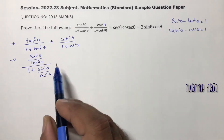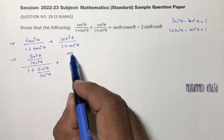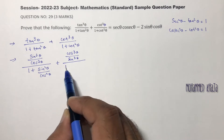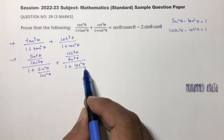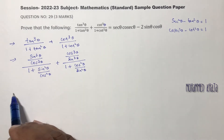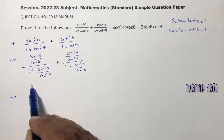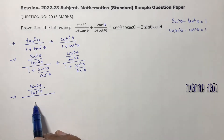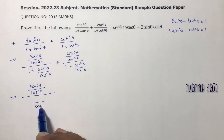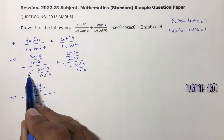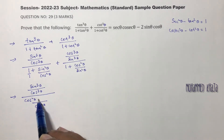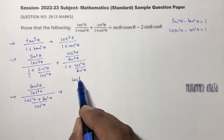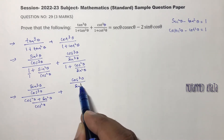Tan square is sin square by cos square. Similarly, cot can be written as cos cube theta by sin cube theta, and 1 plus cot square theta becomes cos square theta by sin square theta. In the numerator, sin cube theta by cos cube theta; in the denominator, take cos square theta as LCM, giving cos square theta plus sin square theta. Similarly for the second term: cos cube theta by sin cube theta, with sin square theta as LCM.